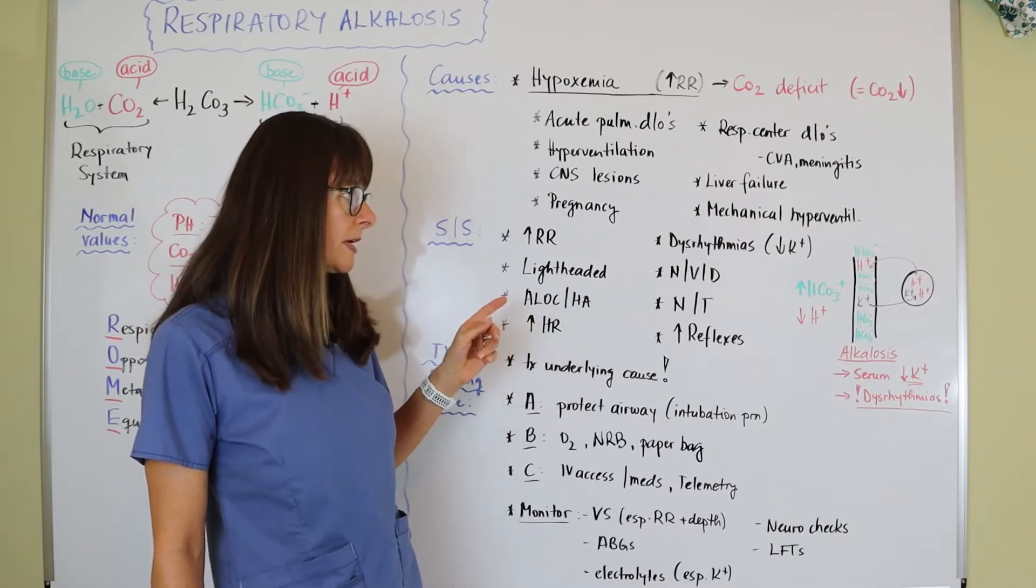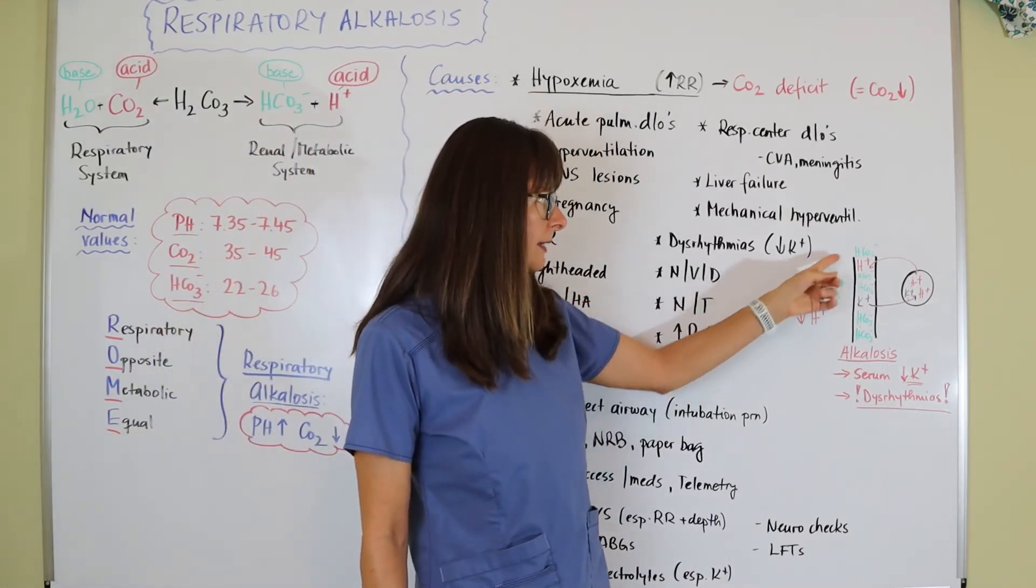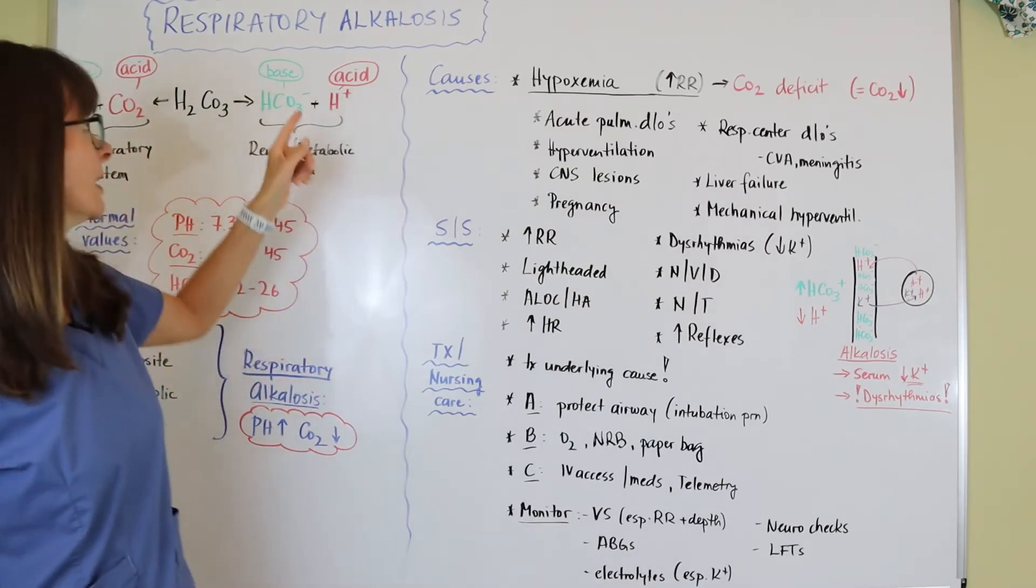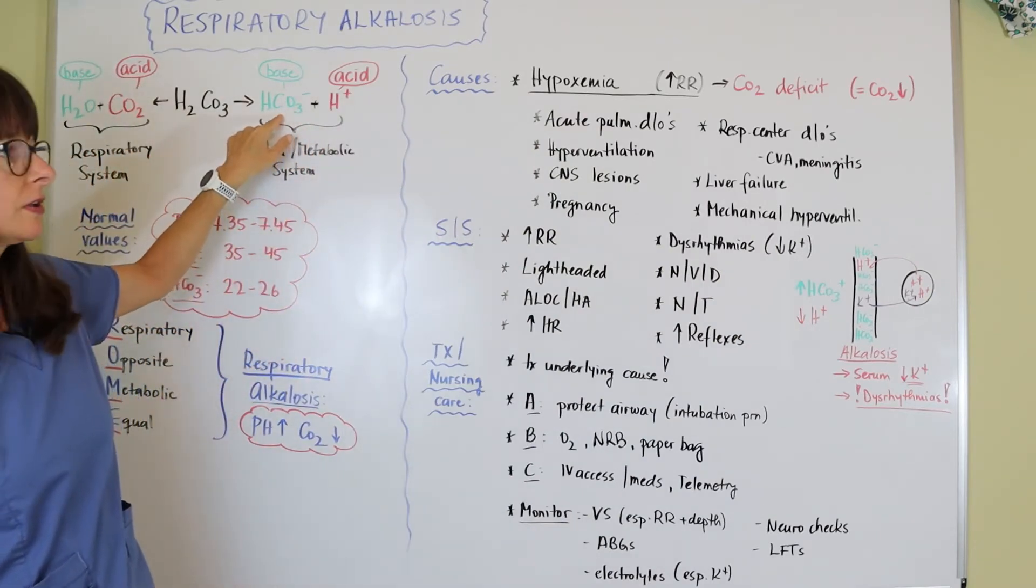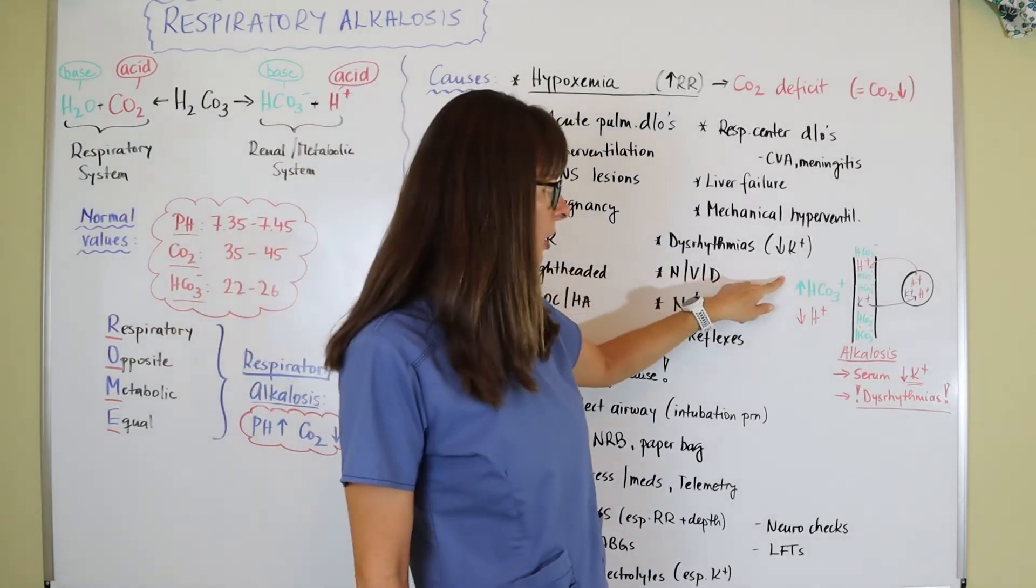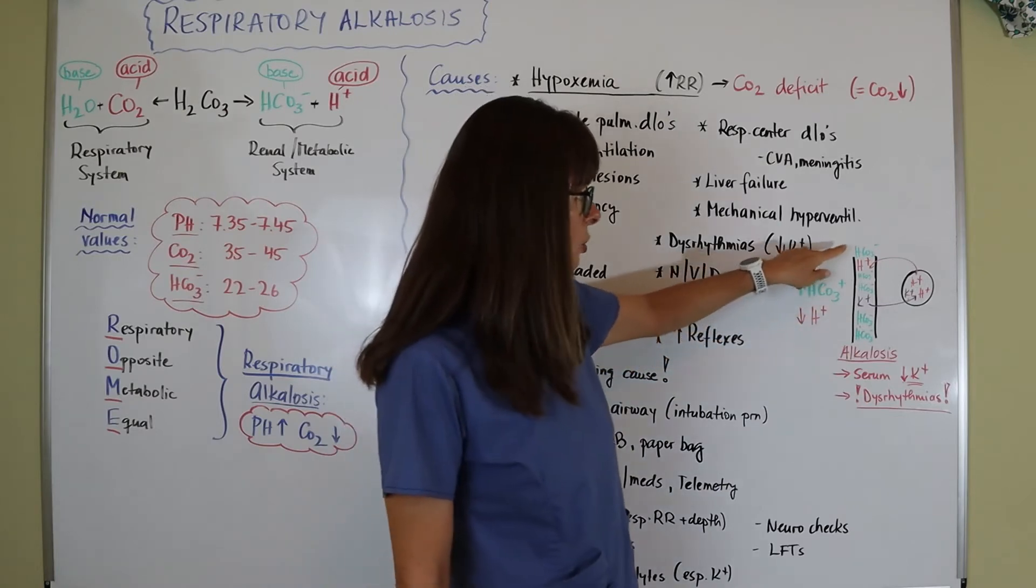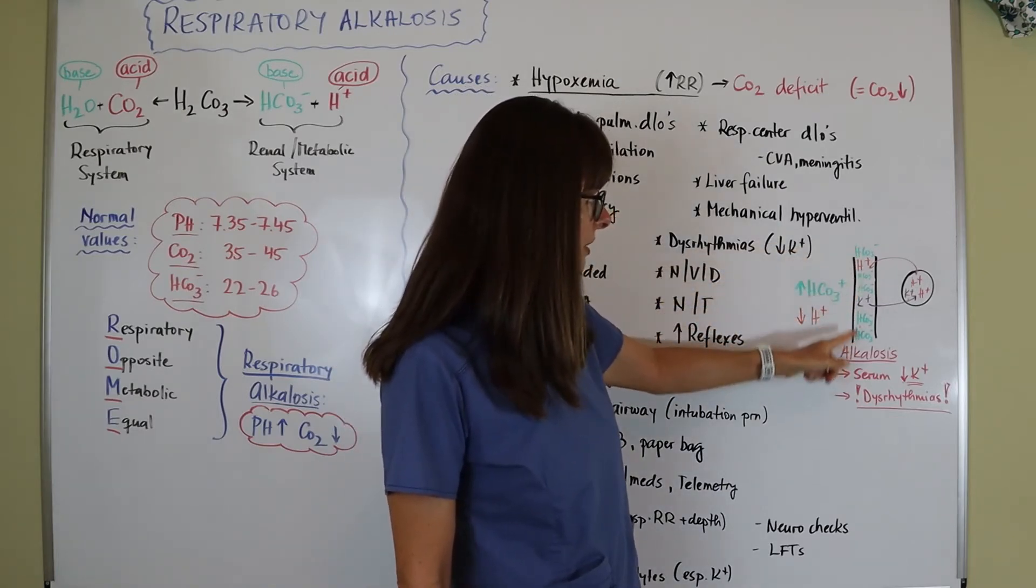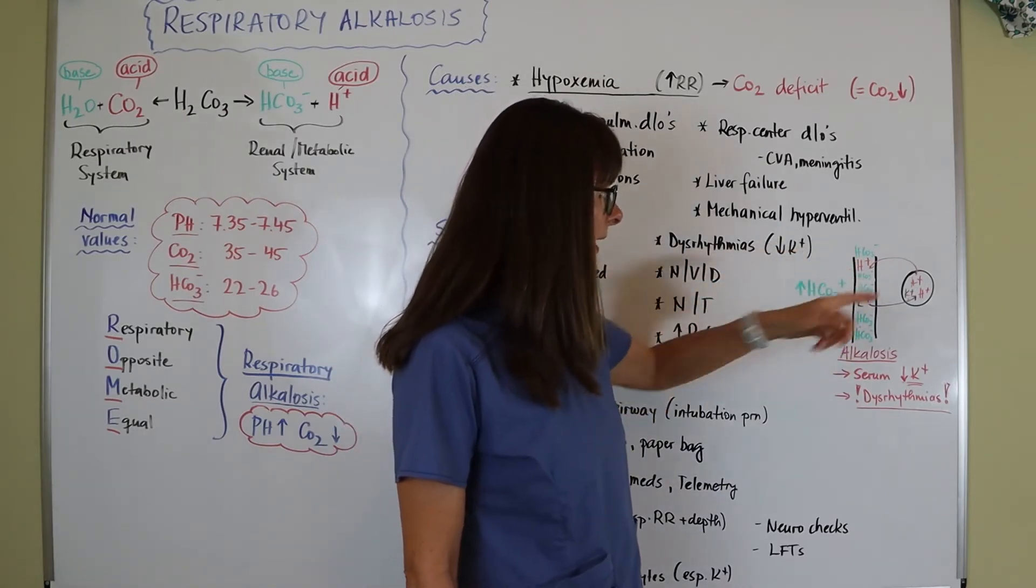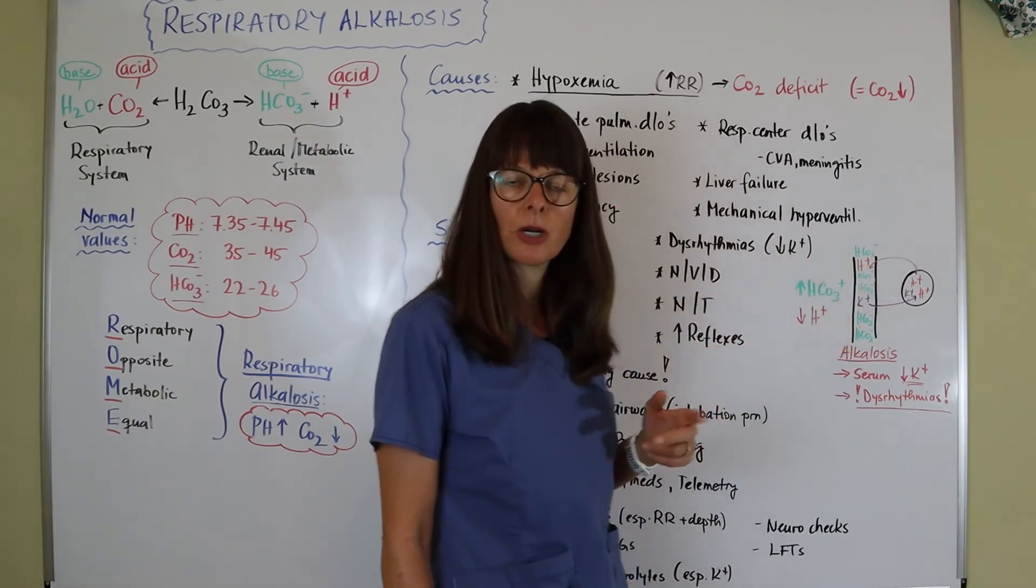Let's look at how respiratory alkalosis leads to dysrhythmias. Typically in an alkalotic state, the bicarbonate, the base of the blood content, will be high, so there's a high level of bicarbonate and a low level of the acid, the CO2 in the blood. We have all this HCO3 in the bloodstream and a little bit of hydrogen only, and then also some potassium.